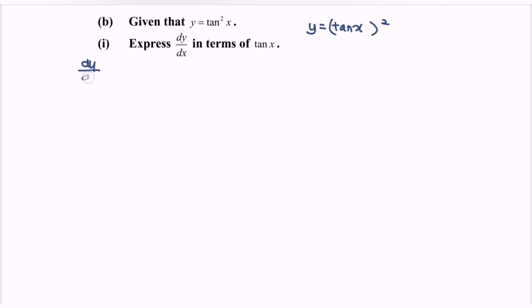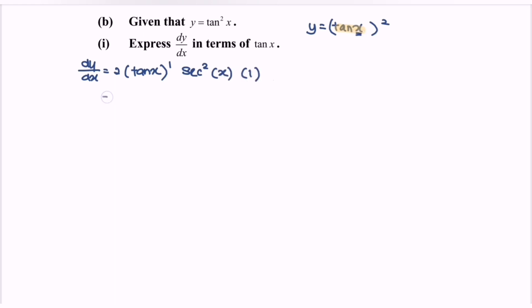So dy/dx is equals to — kindly focus on the power — 2 bracket tangent x to the power of 1. Differentiate the internal function, and we will have sec squared x. Differentiate the x, and we will have 1. Rewrite the situation: so dy/dx equals 2 tangent x sec squared x.